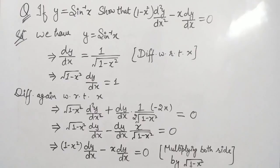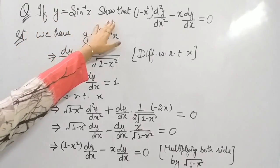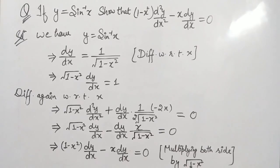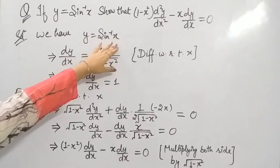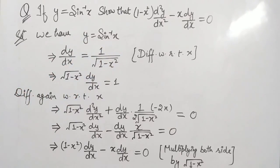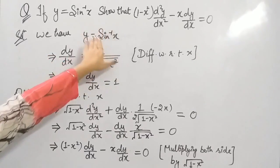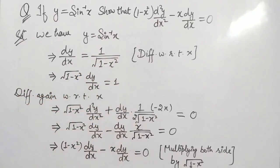Our next question is: if y equals sin inverse x, then show that (1 − x²)·d²y/dx² minus x·dy/dx equals zero. We have y equals sin⁻¹x, and differentiating with respect to x gives dy/dx equals 1 upon under root (1 − x²).